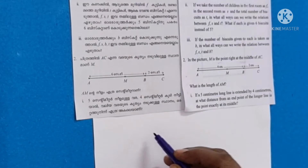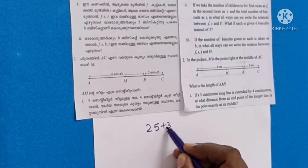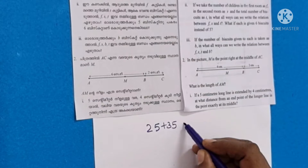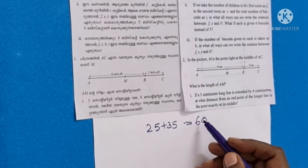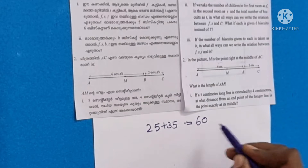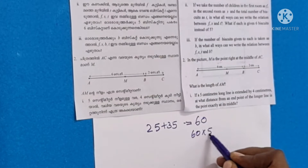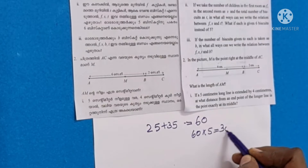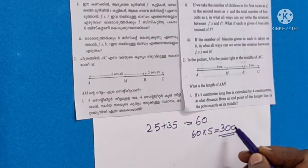25 and 35 children — 25 plus 35 gives 60 children in total across both rooms. We will give them 5 biscuits each.